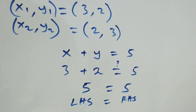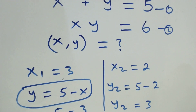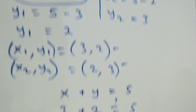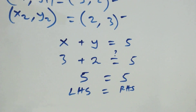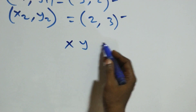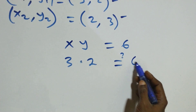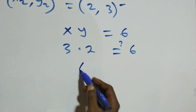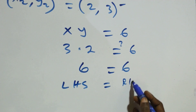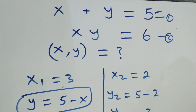Both solution sets satisfy equation one. Checking equation two, x times y equals six: substituting three times two gives six, which equals six — left hand side equals right hand side. Therefore, both sets of solutions satisfy the two given equations.